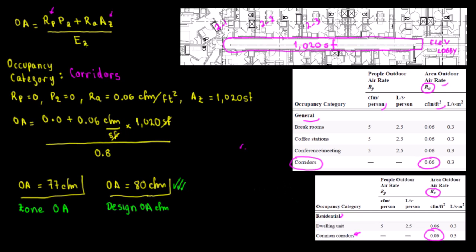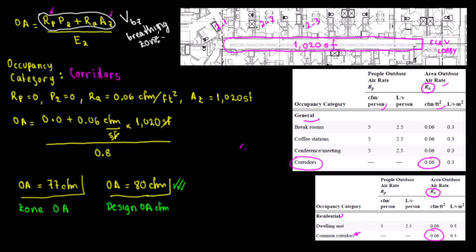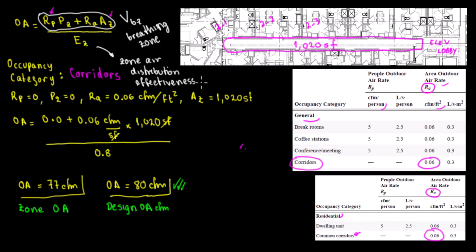A couple of terminology notes: the numerator portion of the formula — RP·PZ + RA·AZ — is what the standard calls Vbz, the breathing zone airflow. The denominator EZ is called the zone air distribution effectiveness.